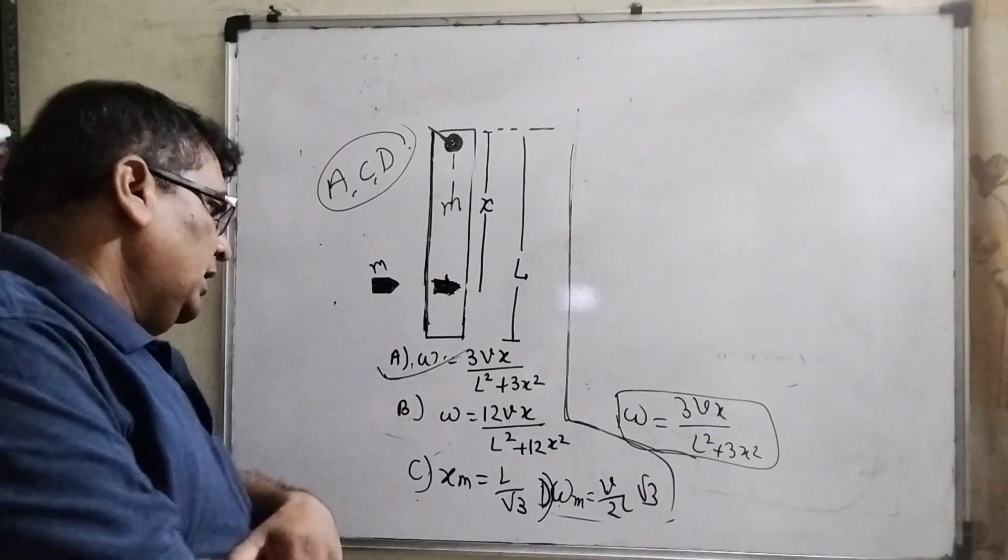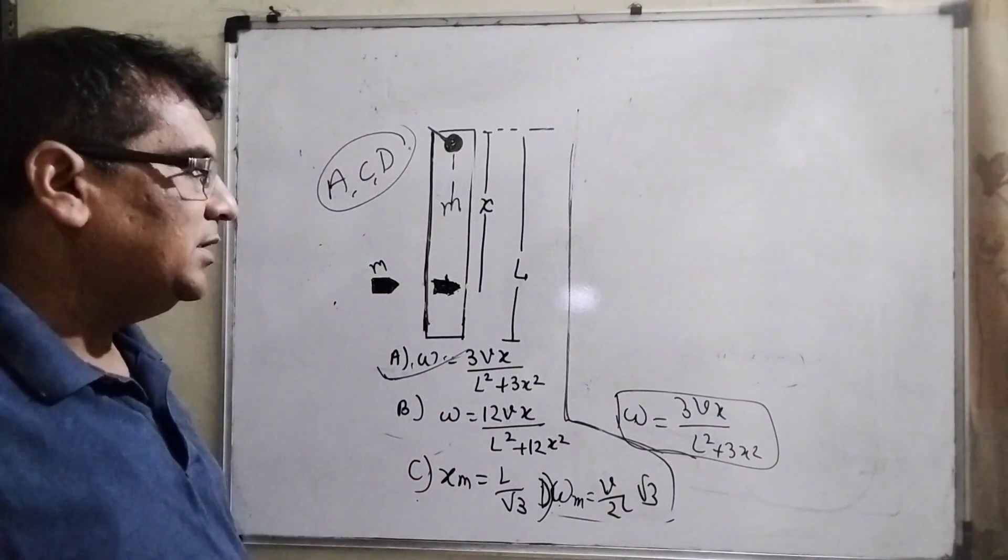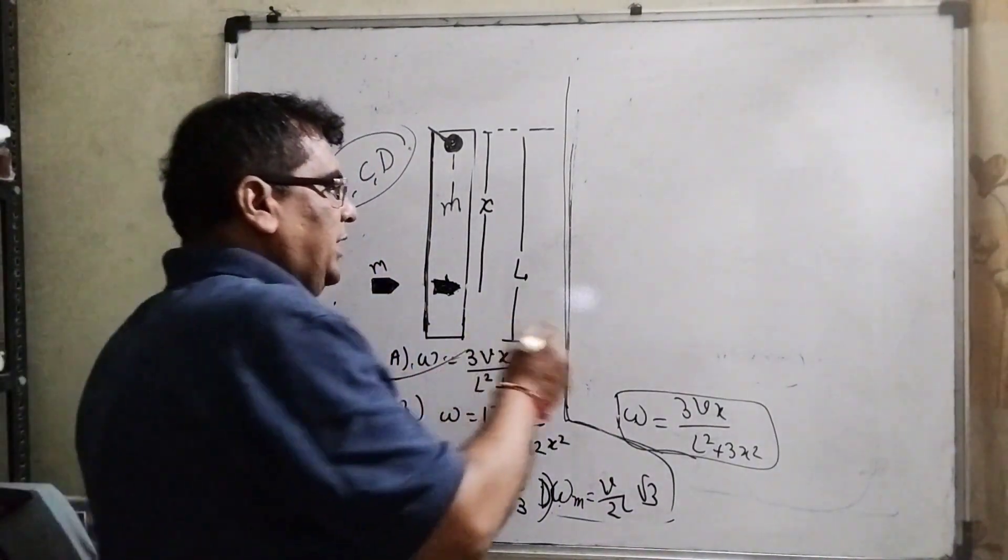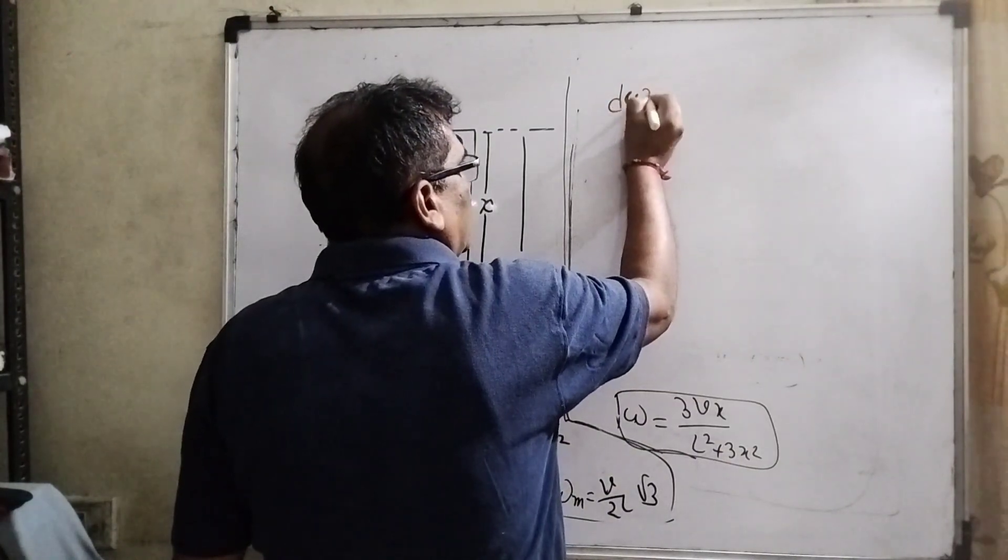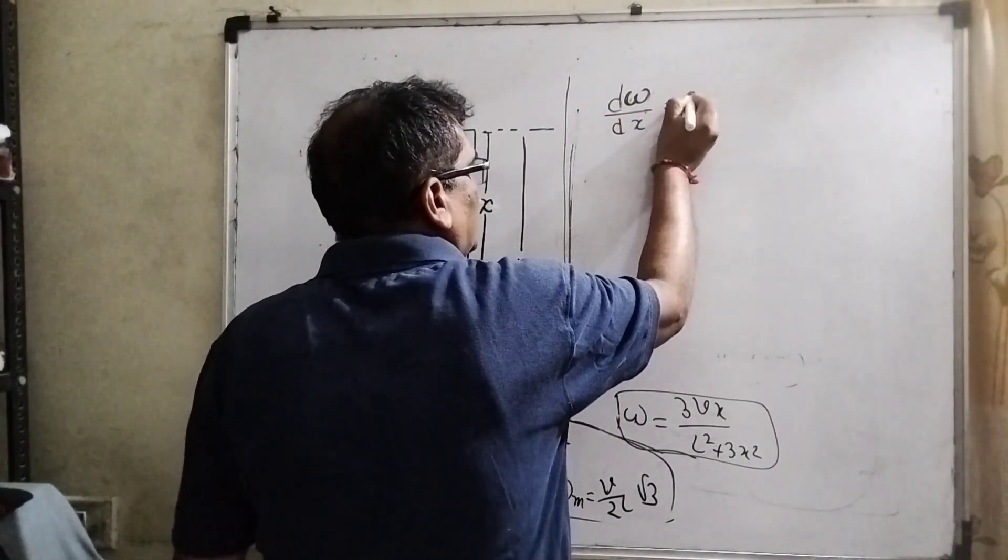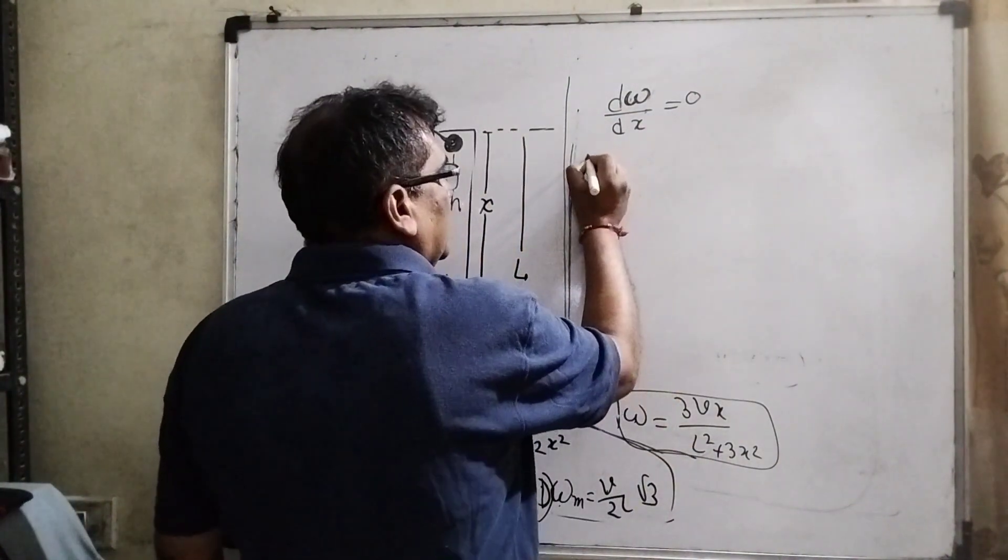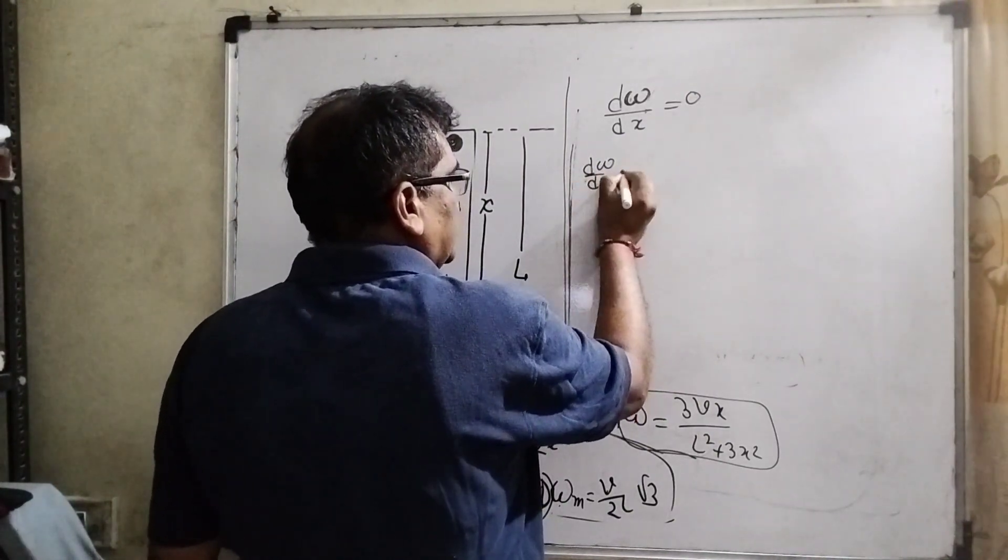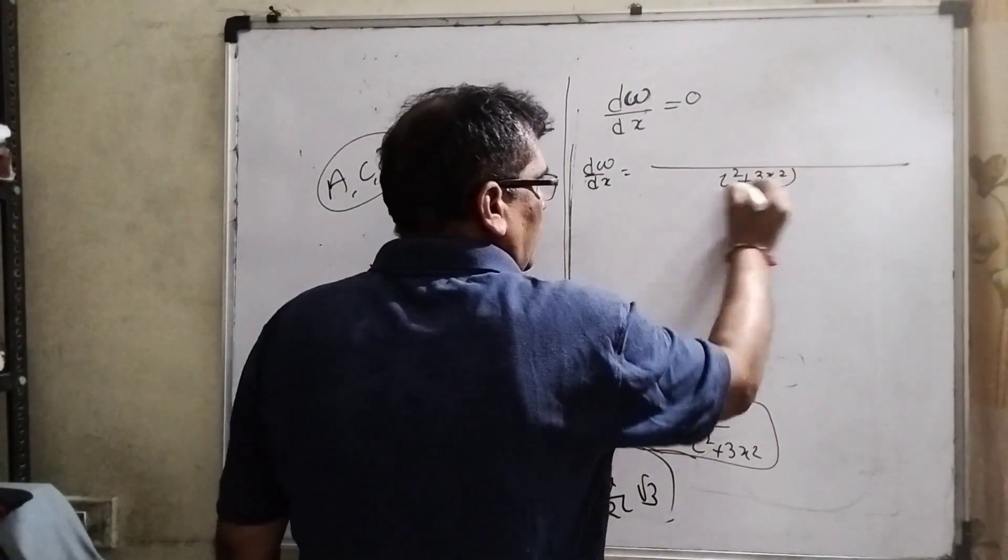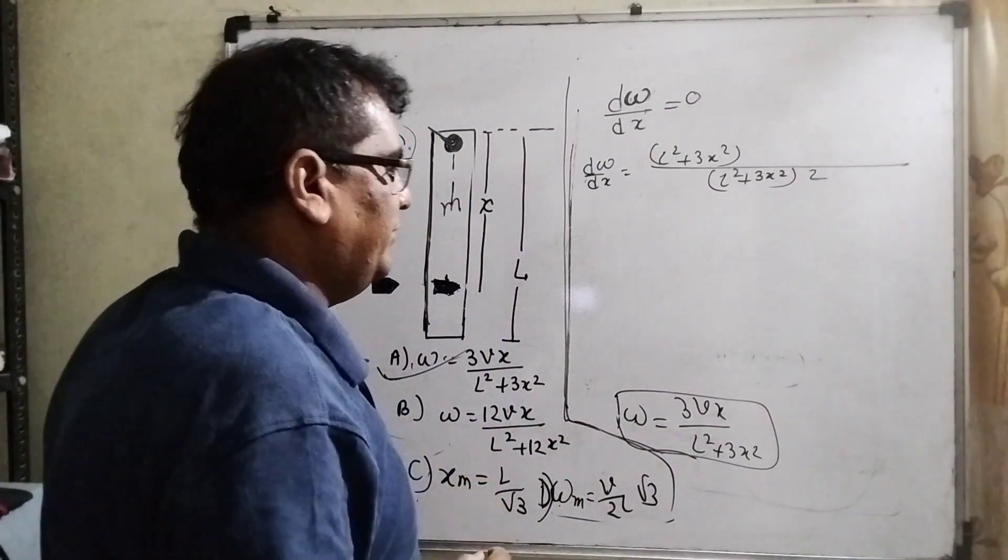Let's see the next question. You can see the rest options: x_m, omega_m - it means maximum angular velocity, maximum distance. The concept is we can use maxima and minima. For maximum angular velocity, dω/dx equal to 0 - the condition for maxima. So differentiate with respect to x. dω/dx - differentiate both sides: L² + 3x² whole square.